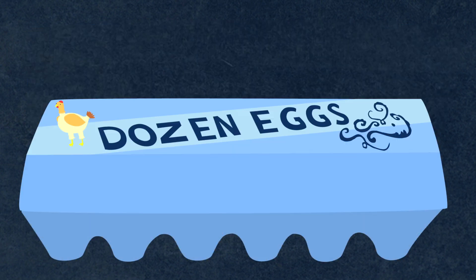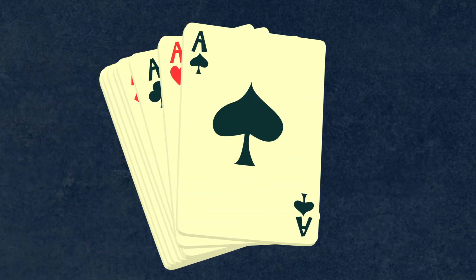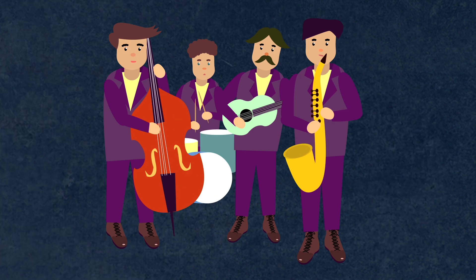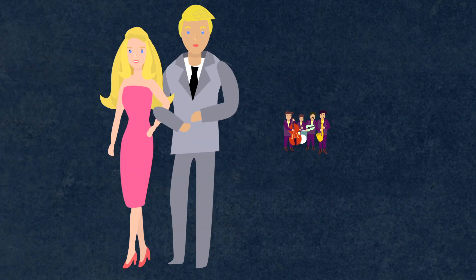A dozen eggs is a composed unit. Other examples of composed units include a deck of cards, a pair of shoes, a jazz quartet, and of course Barbie and Ken make a couple.